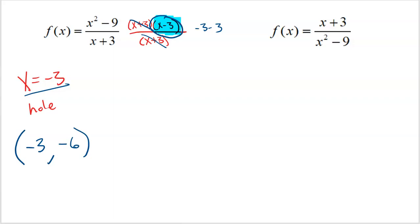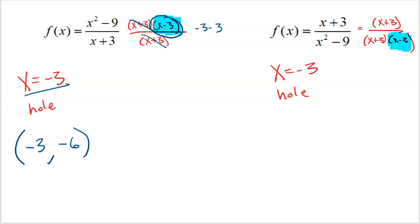Let's do the similar function over here. This time the numerator is x plus three and the denominator is x plus three times x minus three. Again, at x equals negative three we have a hole because it makes both the numerator and denominator equal to zero. The x minus three in the denominator is going to be a vertical asymptote because it only makes the denominator equal to zero. To find the y-coordinate of the hole, cancel the common x plus three factors and what's left is one over x minus three. Plug in negative three: one over negative six. So the hole is located at negative three comma negative one-sixth.